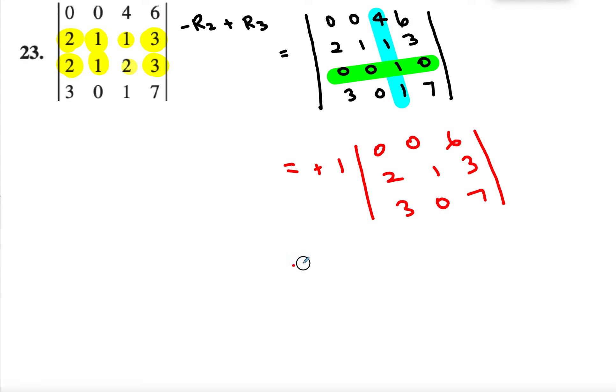Then I can just rewrite this one as plus 1 times, I can just look at this one, 6 times the determinant of the minor. The minor is 2, 1, 3, 0.